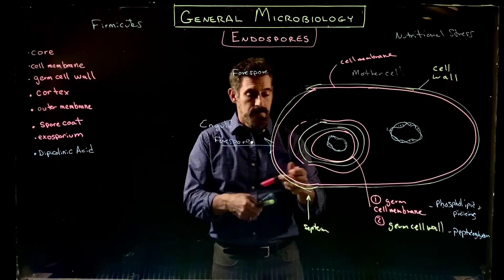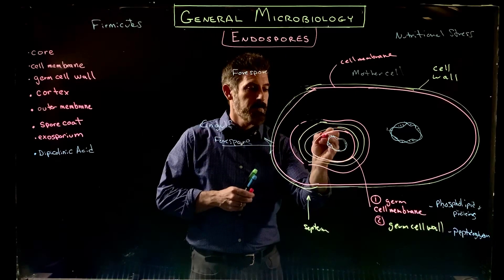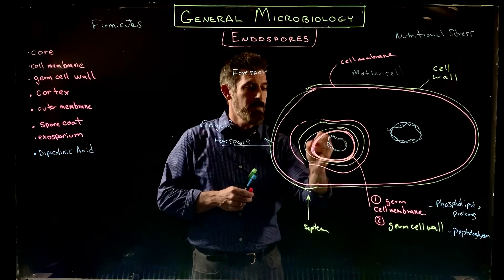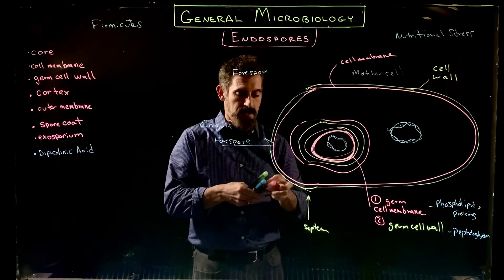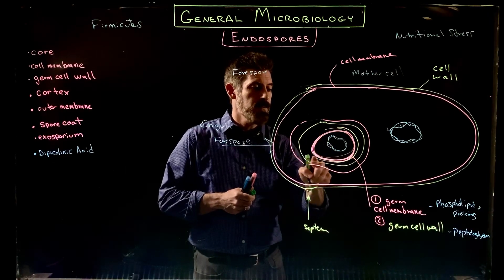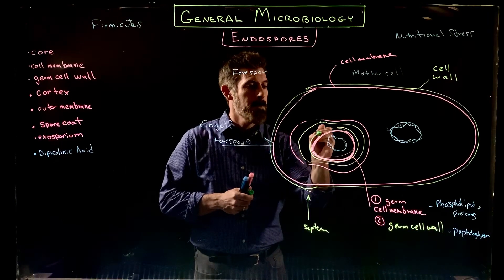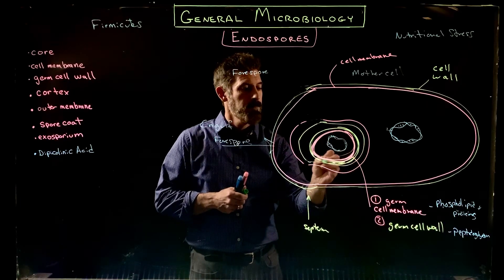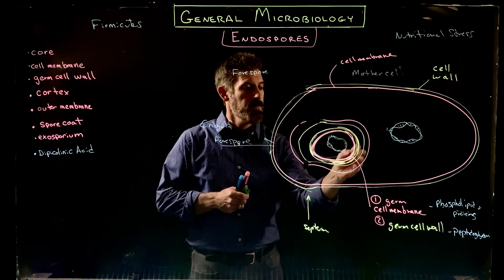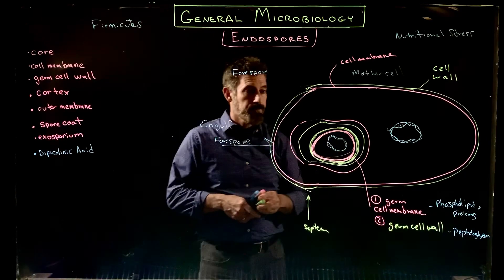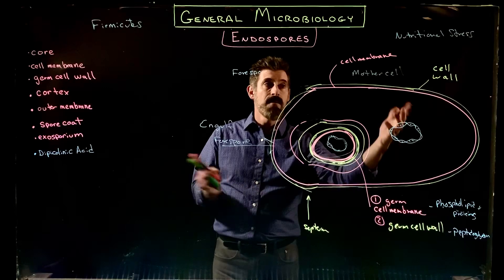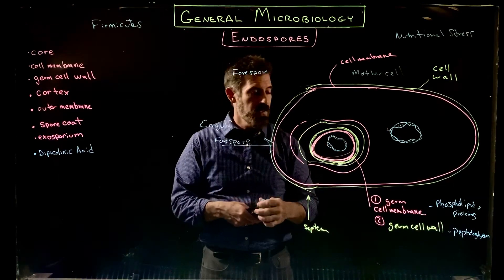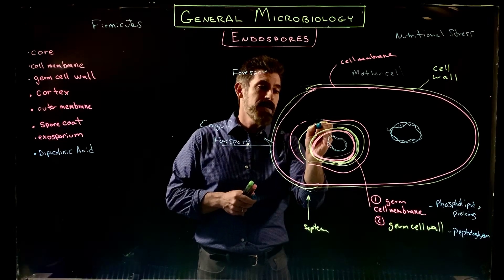That first layer is the cell membrane, and around it is the cell wall. Outside that was the cell wall of the mother cell — so when it engulfed the forespore, that part came around, giving us this other green layer here. But now this layer is going to be modified.